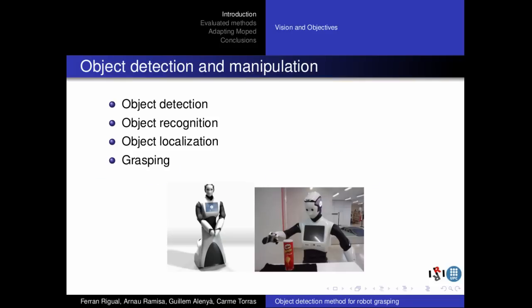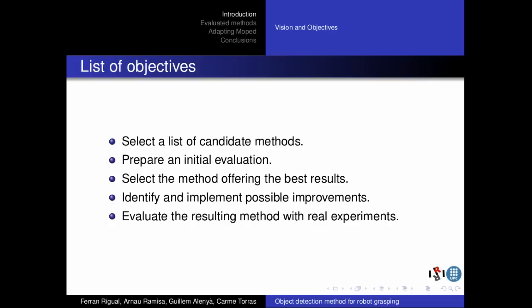We work with the RIM robot of PAL Robotics. The main objective of the project is to provide RIM with a system capable of detecting, recognizing, localizing and grasping objects. Furthermore, there is a second list of objectives more related to the methodology of the project. The followed strategy is to select a list of candidate methods, prepare an initial evaluation, select the method offering the best results, identify and implement adaptations and improvements over this method, and evaluate the resulting method with real experiments.